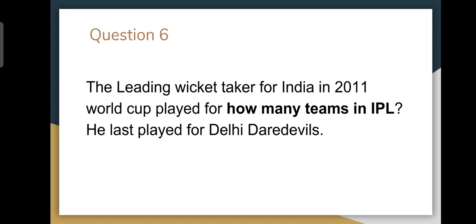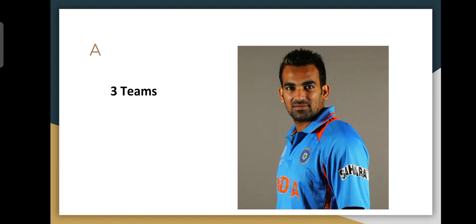Moving on to question number six — the leading wicket taker for India in the 2011 World Cup, who last played for Delhi Daredevils. This cricketer is indeed Zaheer Khan, and it is Zaheer Khan's birthday — so this was a dedicated birthday tribute question. He played for Mumbai Indians, Royal Challengers Bangalore, and Delhi Daredevils, making a total of three teams. Zaheer Khan, three teams — three is the answer.